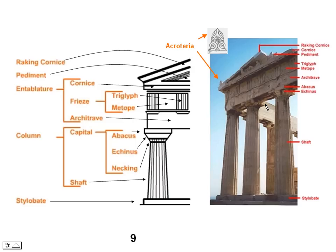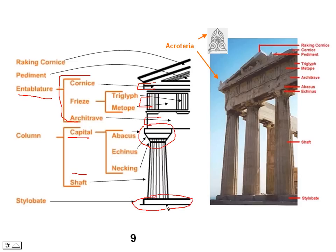This illustration adds that the cornice, the frieze, and the architrave all together make up what is called the entablature. The column is divided into the capital and the shaft. The stylobate is just the area immediately under the columns. One other thing worth noting is the acroteria — decorations at the top and ends of the temple roof, sometimes at the very top or the other side of the temple roof.